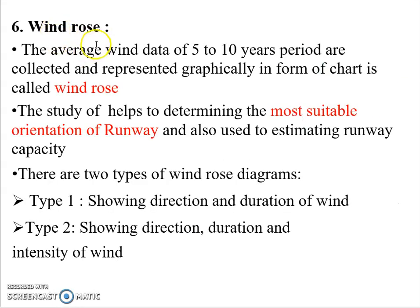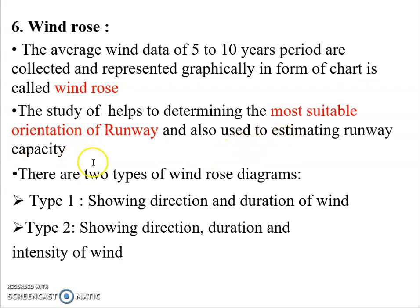The next topic is the Wind Rose Diagram. The average wind data of 5 to 10 years period are collected and represented graphically in the form of a chart, which is known as a Wind Rose. The study of this helps to determine the most suitable orientation of the runway and is also used to estimate the runway capacity. There are two types of Wind Rose Diagrams: Type 1 shows the direction and duration of the wind, and Type 2 shows the direction, duration, and intensity of the wind.